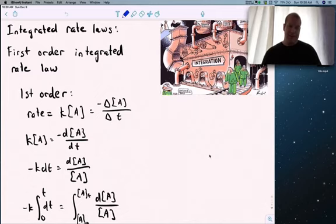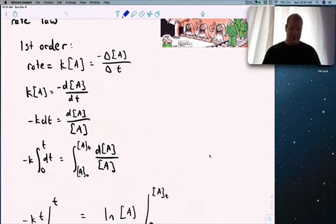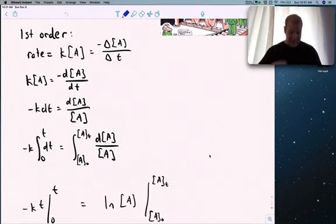Instead of change, I'm going to give it the infinitesimal delta, dA. So the rate constant times concentration A equals minus dA over dt. I'm going to rearrange, putting K and the negative on the left side, giving dA over A equals minus K dt.